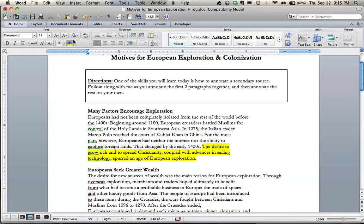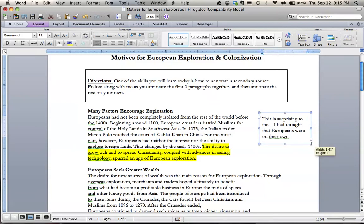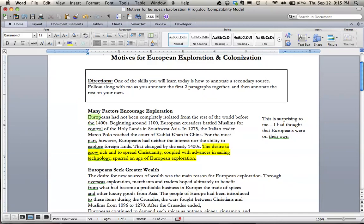Now, what I'd also like to add is a few comments in the margin. So I'm just going to do that in the form of a little text box. So Europeans had not been completely isolated from the rest of the world before the 1400s. So this is actually surprising to me, because I had thought that Europeans were on their own. Okay, so let me just expand this out here. And then what I want to do is I want to go and underline the part that stuck out to me. So Europeans had not been completely isolated. That's my comment there.